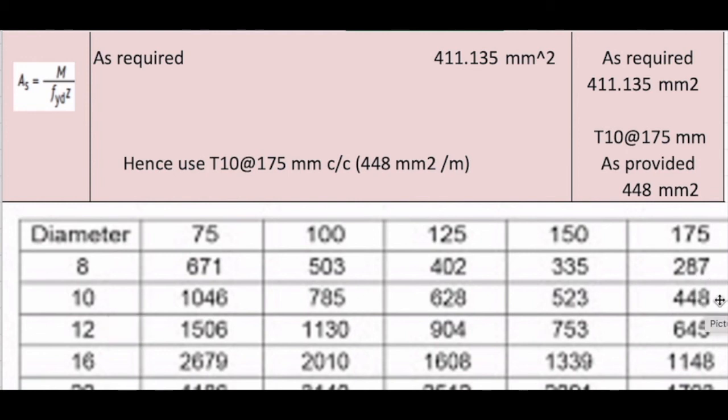We have to choose 448. It has to be higher than the value for the safety and conservative approach. So 448 is the As we are going to provide, the area of steel we are going to provide.